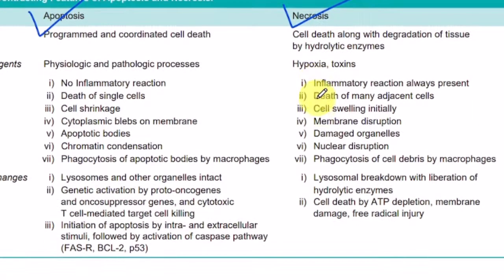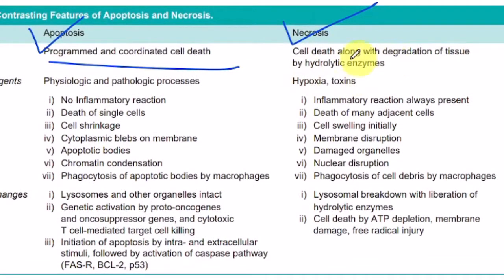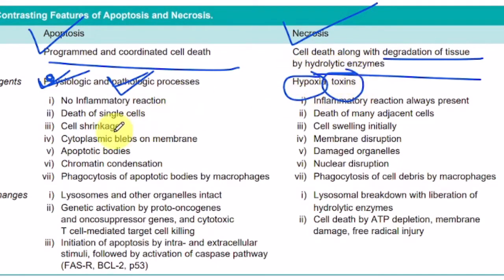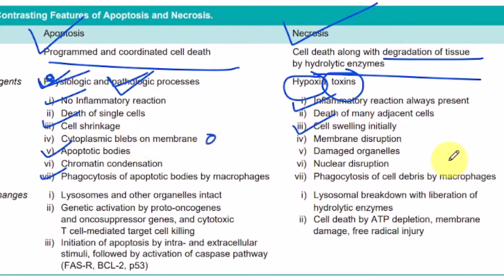We must also understand the difference between apoptosis and necrosis. Apoptosis is a programmed cell death, while necrosis is a particular degradation of tissue with hydrolytic enzymes. Causative agents for apoptosis can be physiological or pathological — as discussed: embryogenesis, thymus gland, intestinal epithelium, myocardial infarction, Alzheimer's disease. Necrosis occurs in cases of hypoxia and toxins. Most importantly, apoptosis has no inflammatory reaction, but necrosis has inflammatory reactions. In apoptosis there is cell shrinkage, caspases are activated, and apoptotic bodies are produced. In necrosis, cells swell rather than shrink, and there is nuclear disruption with pyknosis, karyorrhexis, and karyolysis.